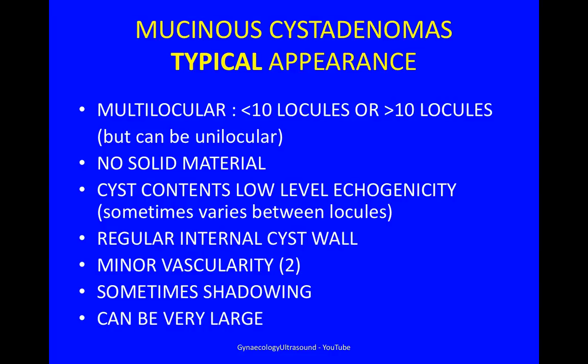The typical appearance of a mucinous cyst adenoma is multilocular, whether it's fewer than 10 locules or more than 10 locules, but occasionally the cysts are unilocular with a single locule. There's usually no solid material. The cyst contents are usually of low-level echogenicity, but this can vary between the different locules, some being anechoic and others of really quite dense echogenicity. The internal cyst wall is usually regular. Vascularity is usually minor with a score of 2. There can be shadowing and they can be very large indeed.